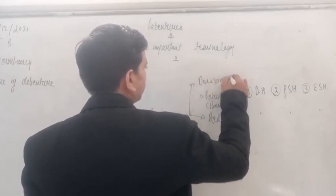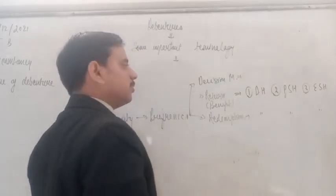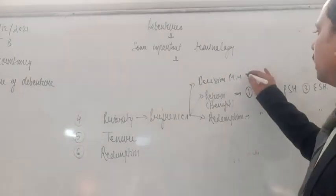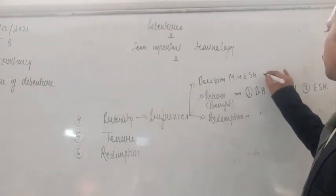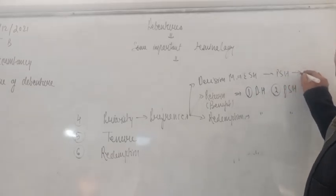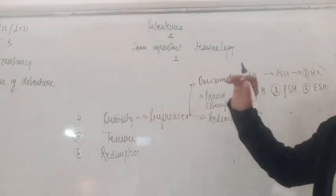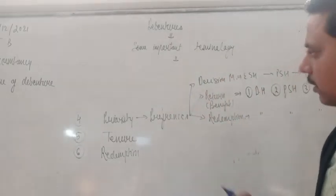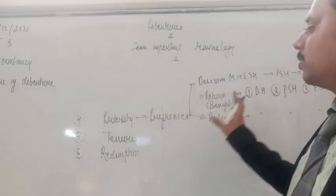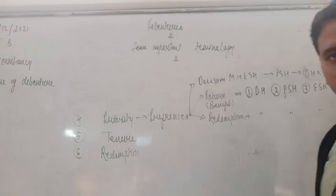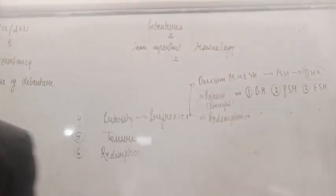लेकिन decision making में priorities opposite हो जाती हैं। Decision making की priorities में पहले equity shareholder को देंगे, फिर preferred shareholder को, और debenture holders को decision making में बिल्कुल नहीं — they are not participated in the management, they are not entitled to give their suggestions in the management plan. These are the areas of priorities on which we assign preferences to various investors of the company.